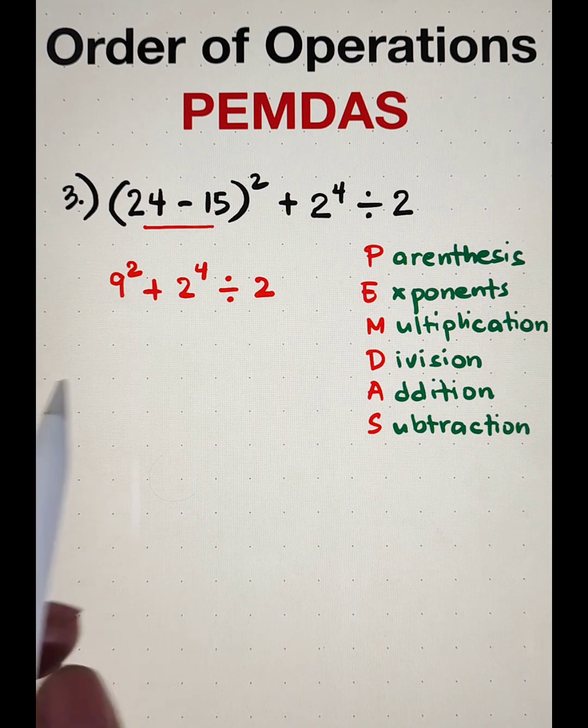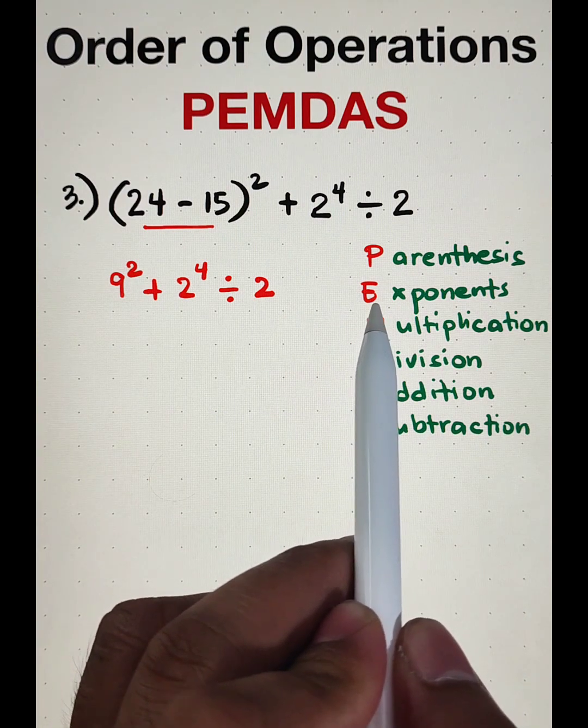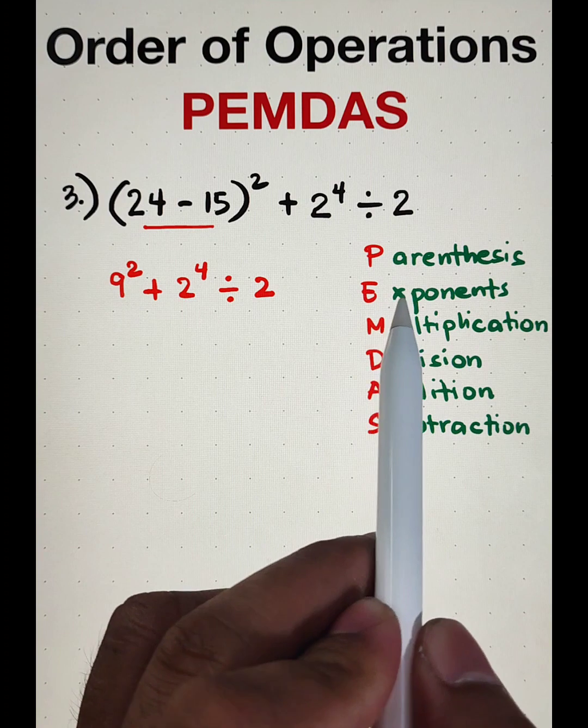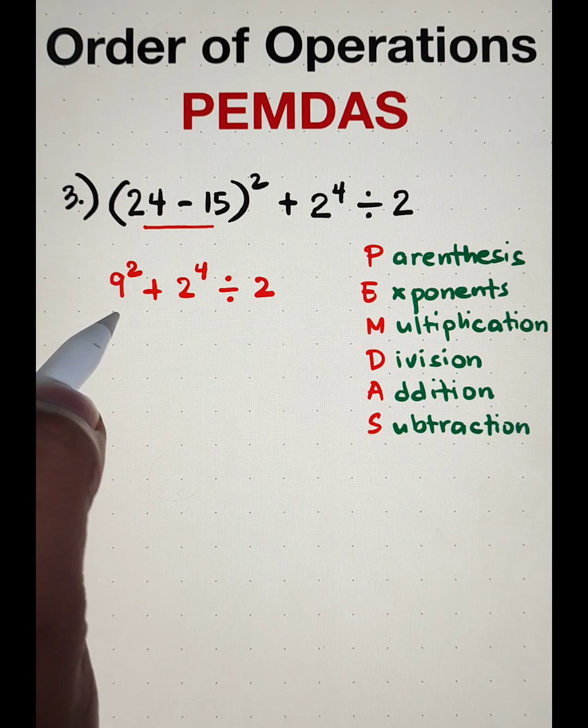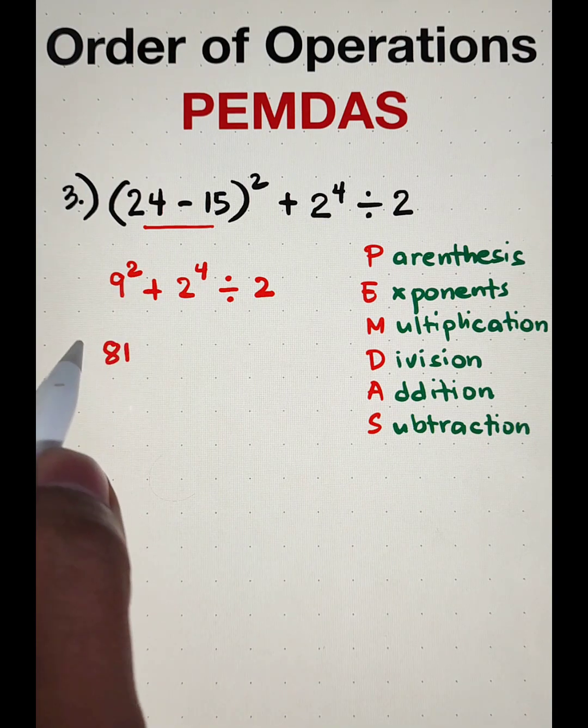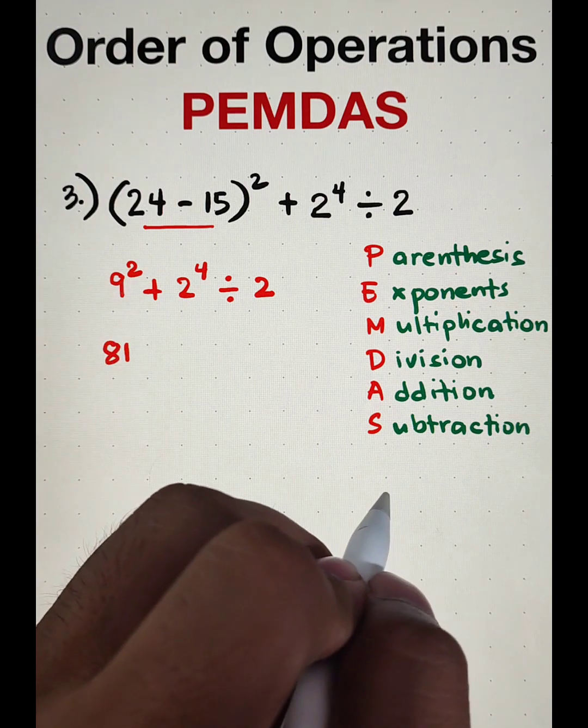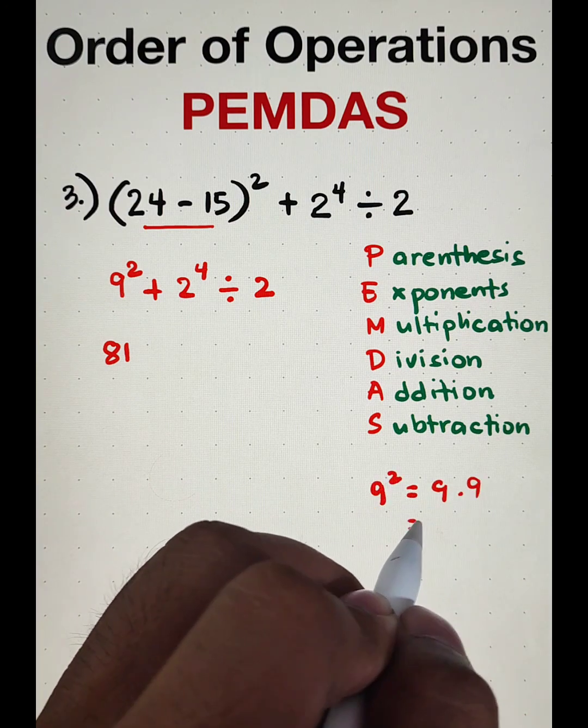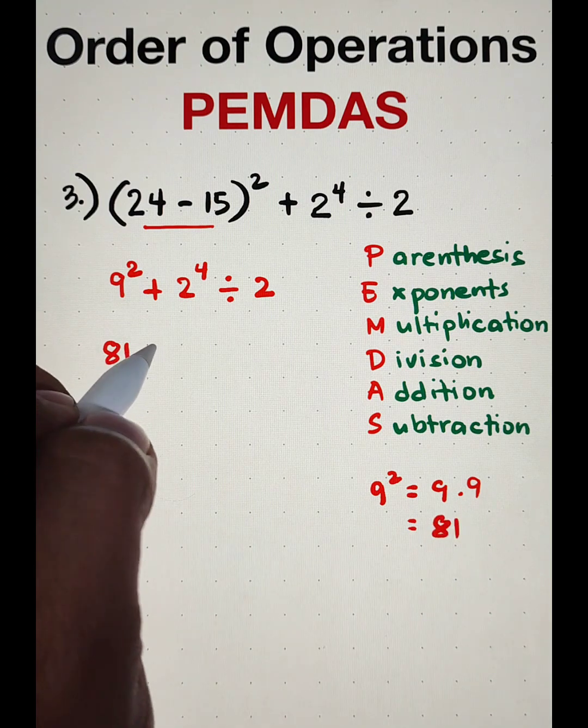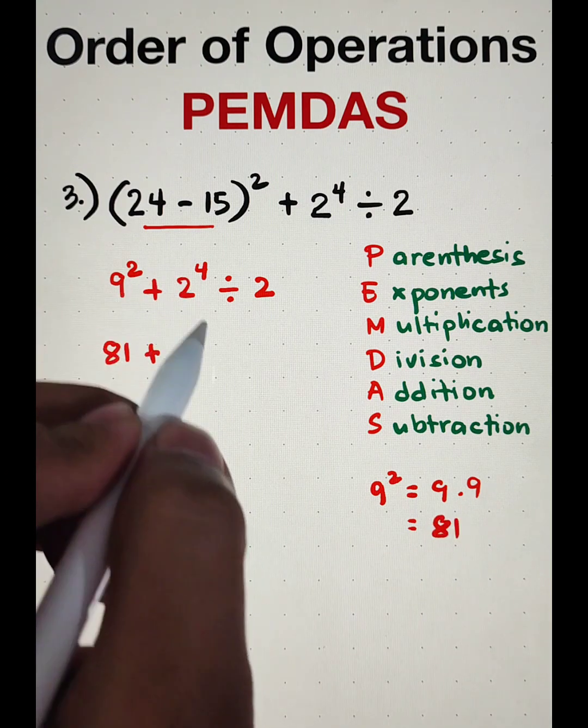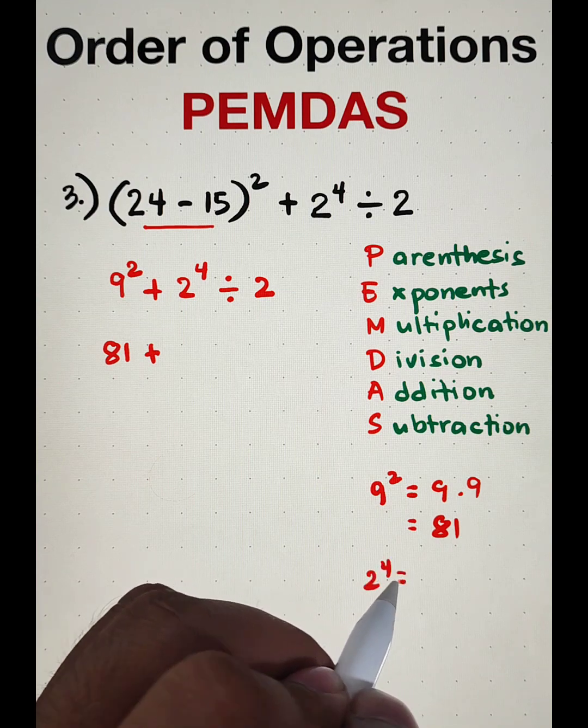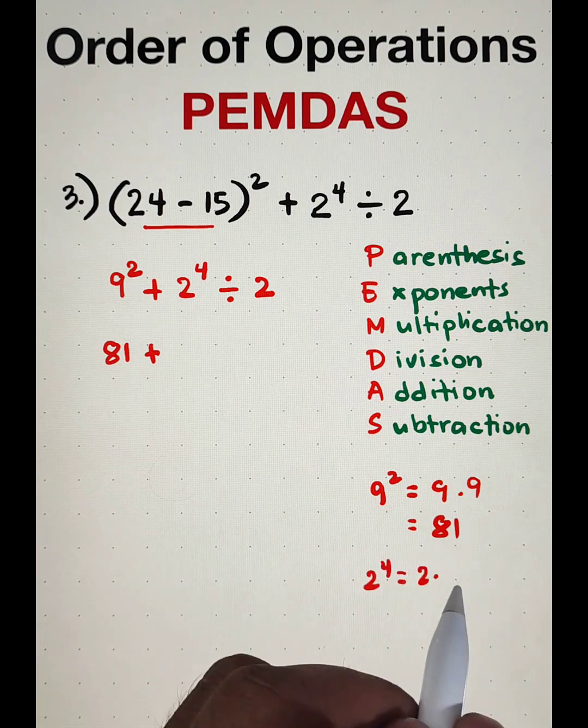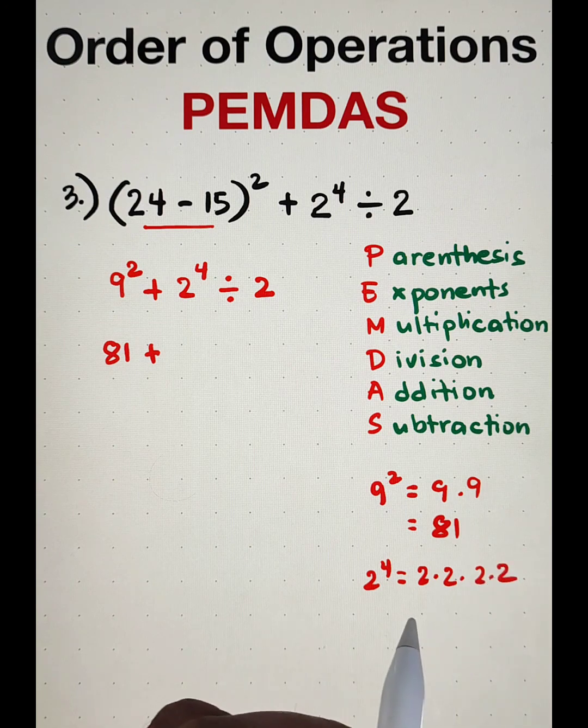So, what we're going next is we will use or we will simplify those numbers with exponents. Here, we have 9 squared. 9 squared is equal to 81. So, how come that 9 squared is equal to 81? The expanded form of 9 squared is simply 9 times 9 and this is 81 plus 2 raised to the 4th power. 2 raised to the 4th power is the same as 2 times 2 times 2 times 2 and it will give us the answer of 16.